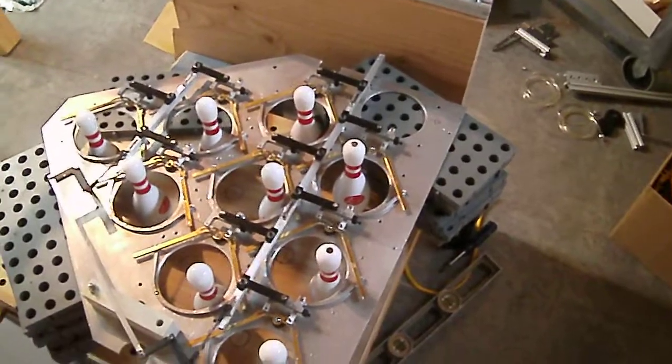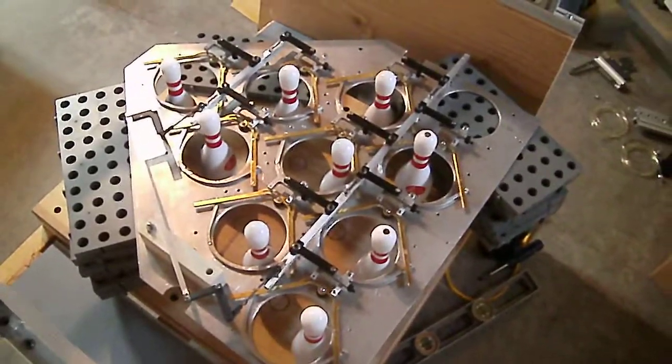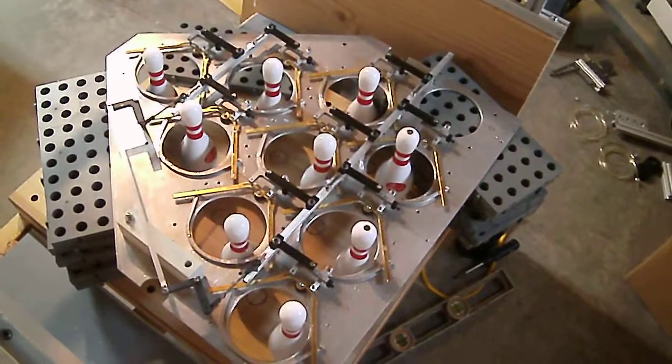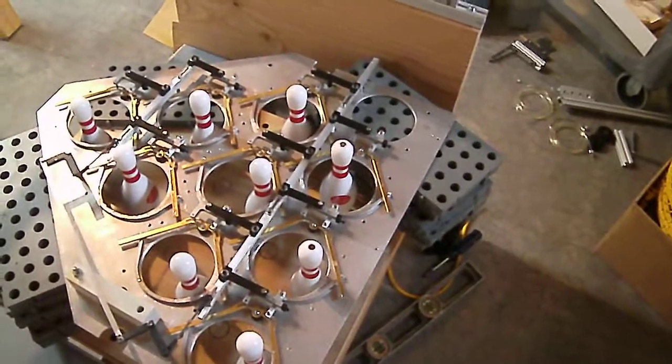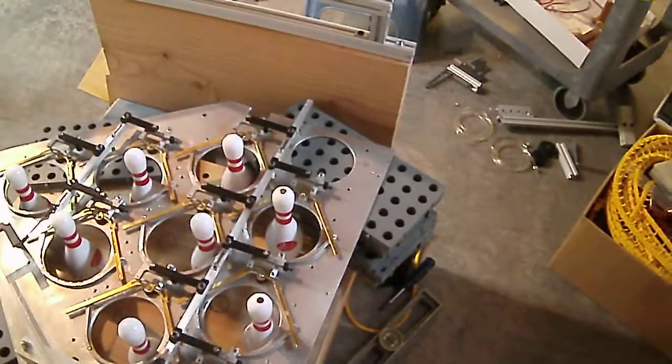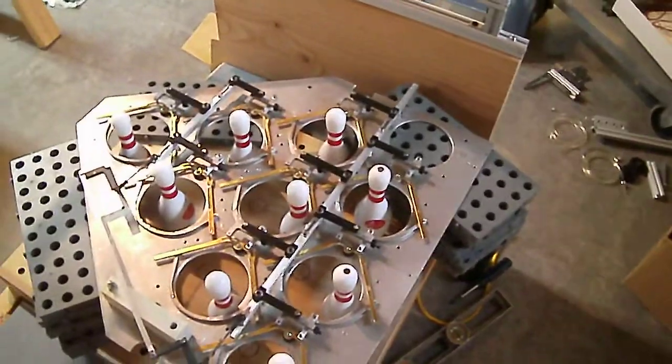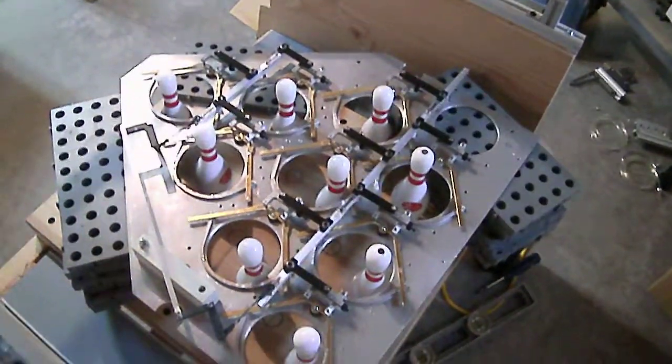I don't have the number 7 position in due to this being the table that I originally started off with for the magnet pin setter design. There just wasn't enough room to get the bushing that the grabbers pivot on over in that spot. Obviously, as I design the new table, I'll be incorporating that.